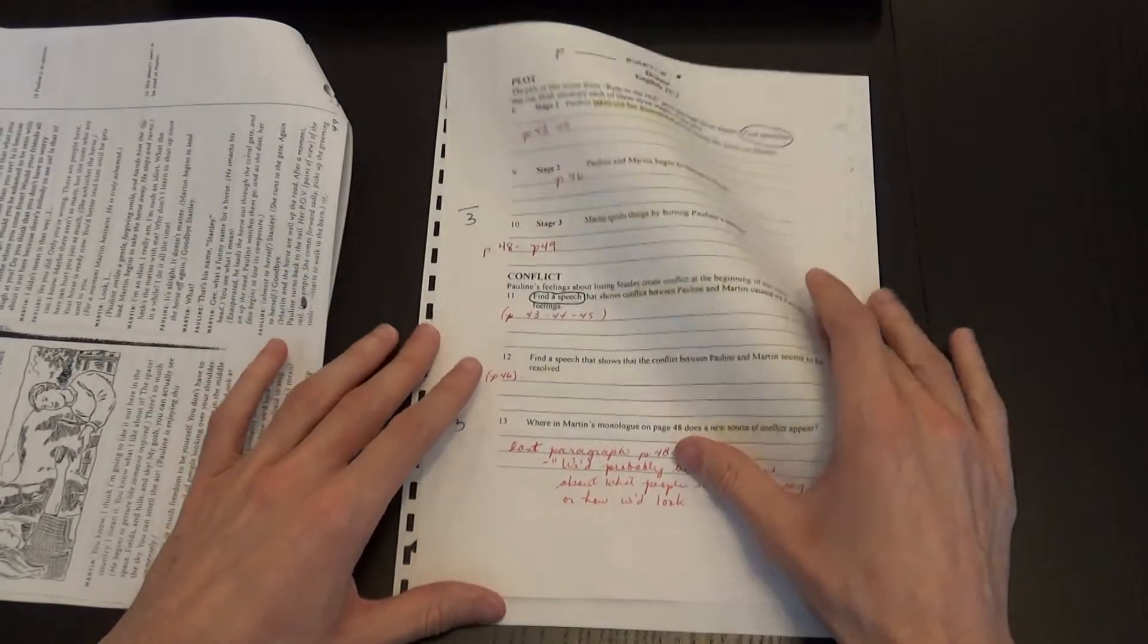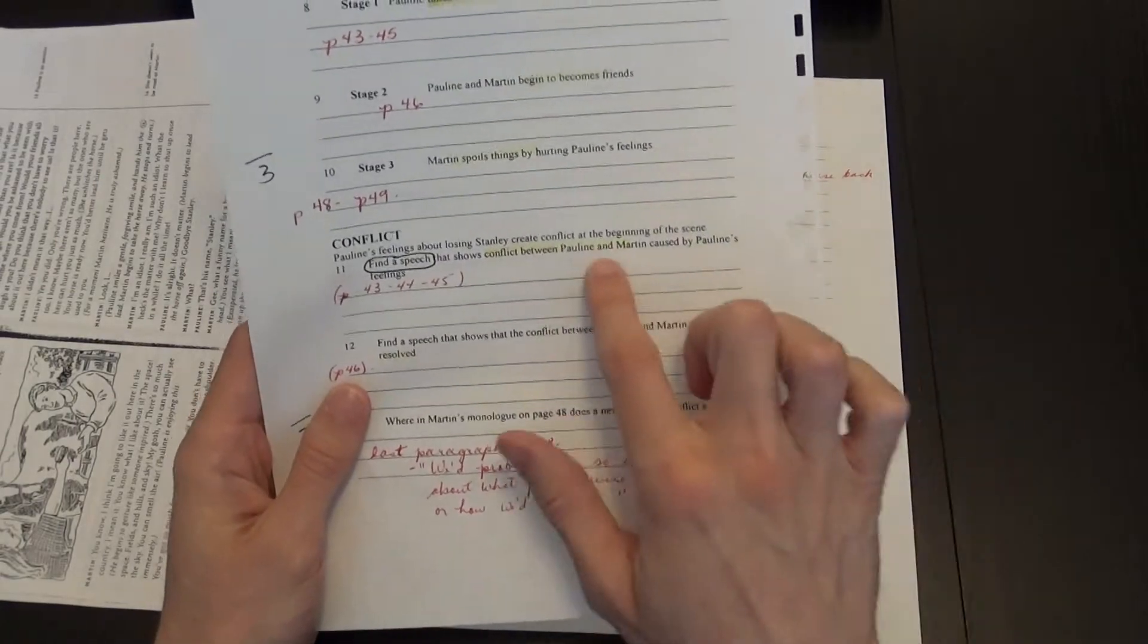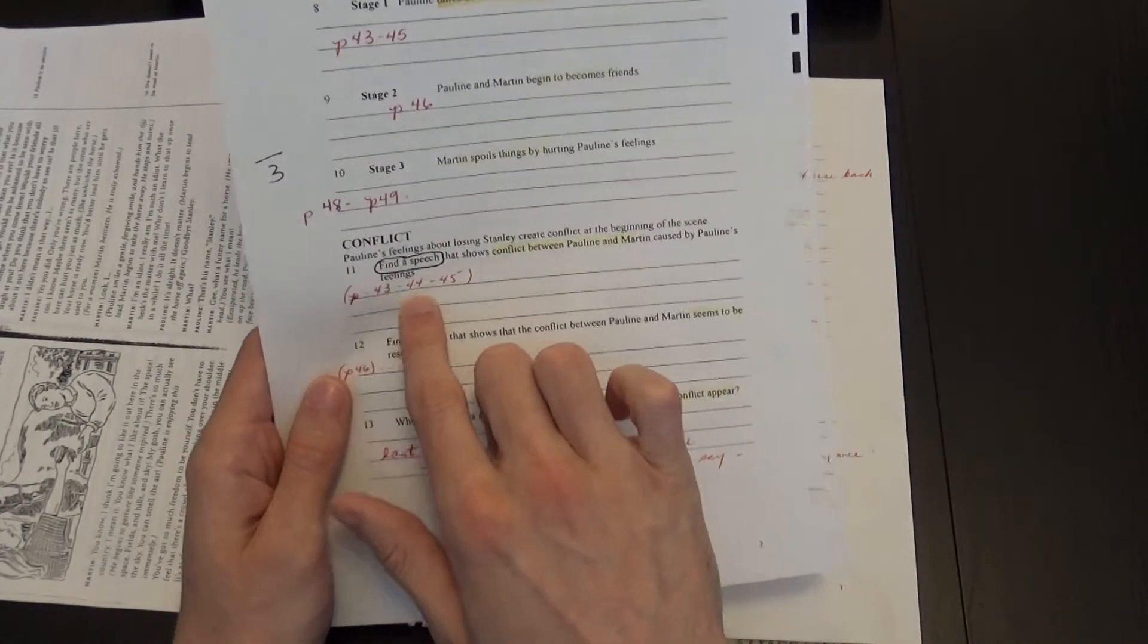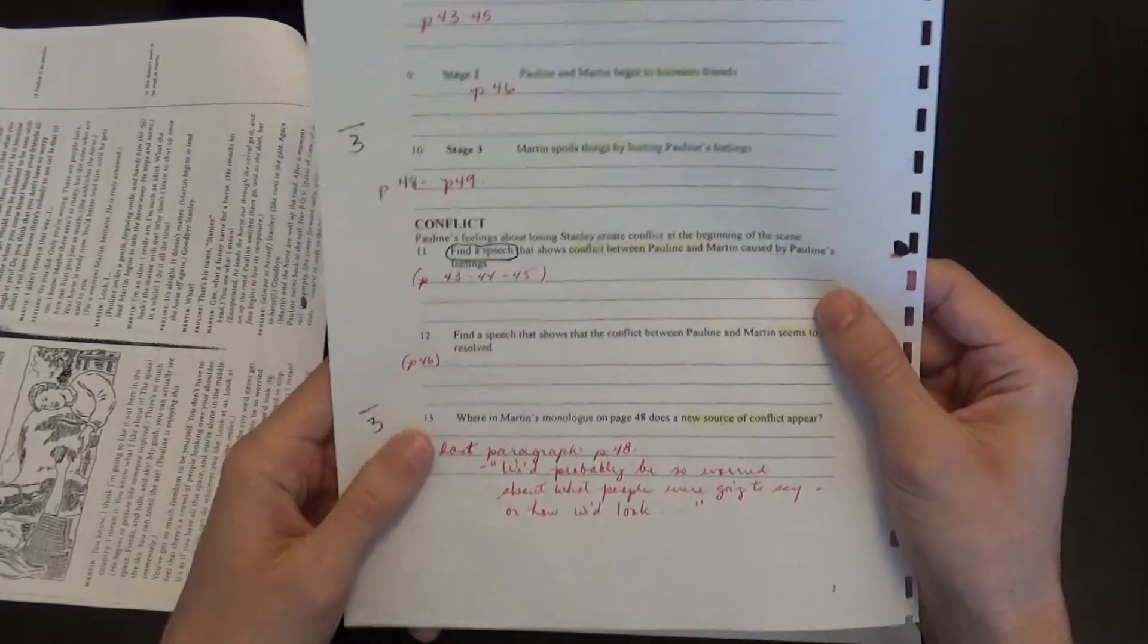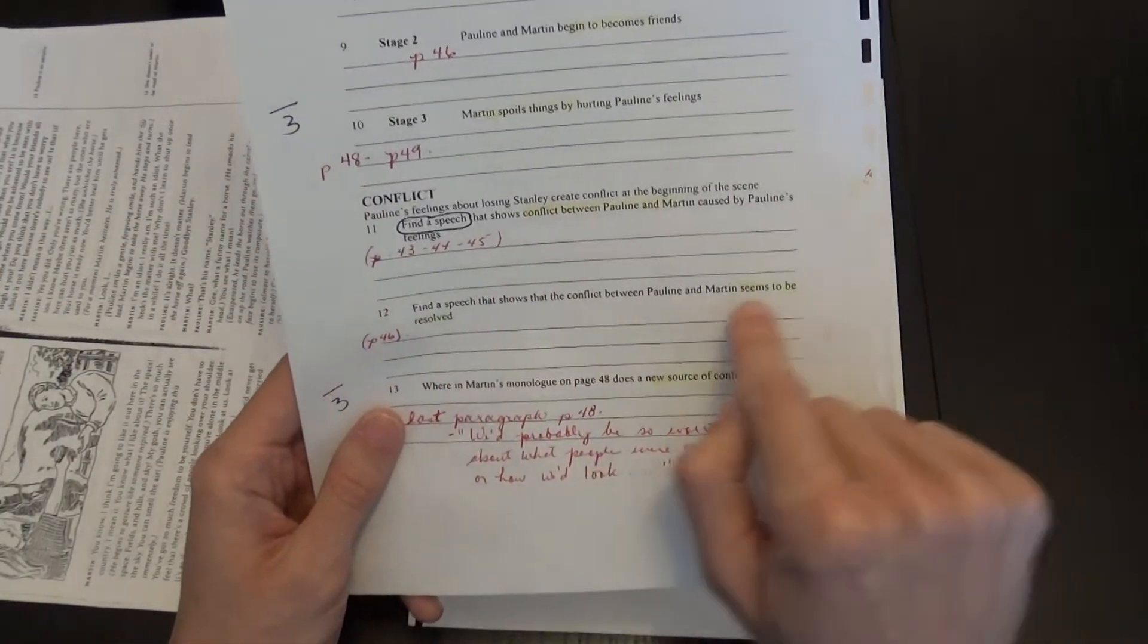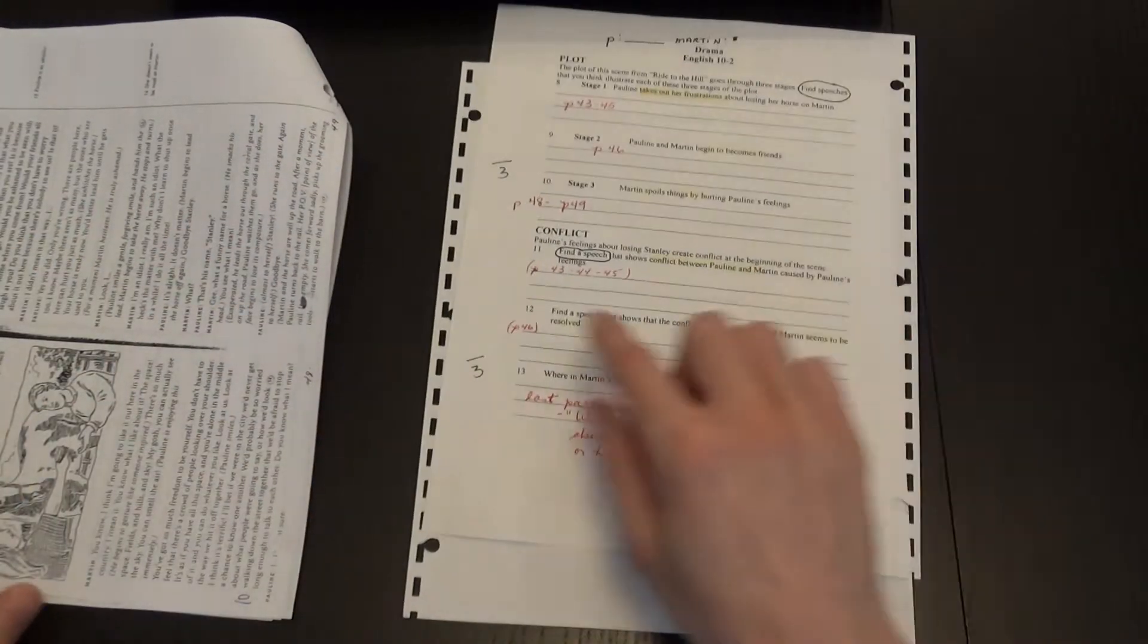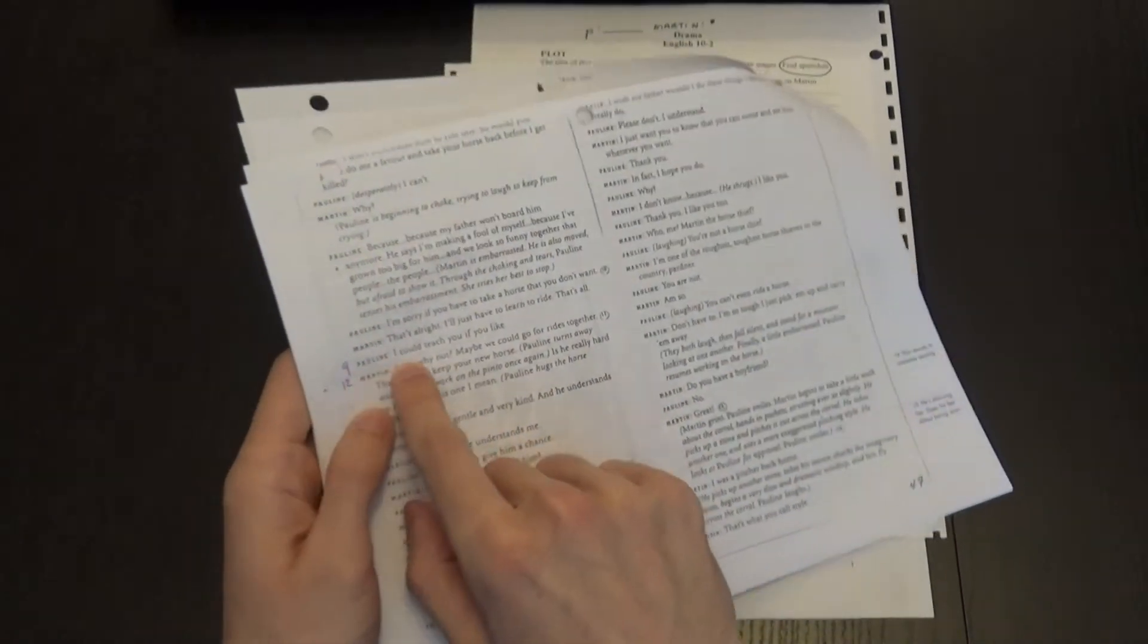Then we have question 11, so it shows conflicts between Pauline and Martin. There are many, so anything between page 43, 44, 45, there are many different quotes. Here, so find a speech that shows the conflict seems to be resolved. So same as question 9, 'I could teach you if you like.'